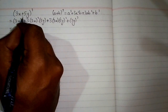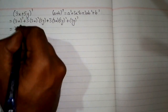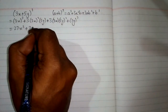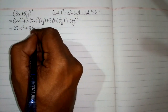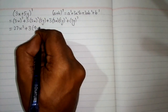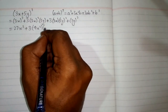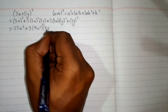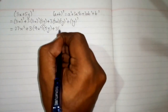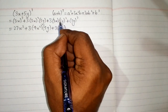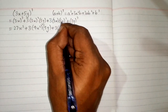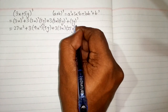Cube of 3 is 27 and cube of x is x cube. Plus 3 times square of 3 is 9, and the square of x is x squared, then we write 5y. Plus 3 times 3x, square of 5 is 25, and the square of y is y squared.